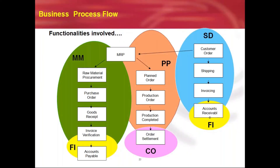This is the integration — see how each and every module is integrated with one another. When a customer places an order, it triggers MRP. MRP decides what type of planning to go for. If no raw material stocks are available, external purchasing takes place — accounts payable handles payment to the vendor — then raw material is issued to production, costing and controlling estimates the cost, and after quality check, the sales order is shipped, invoiced, and accounts receivables collect payment from the customer.